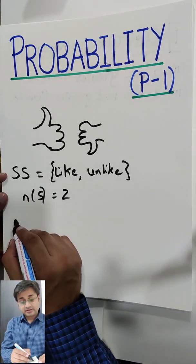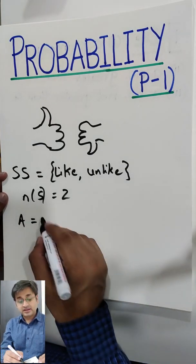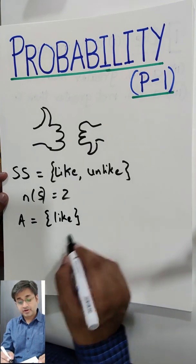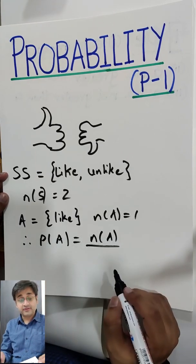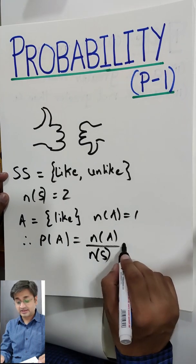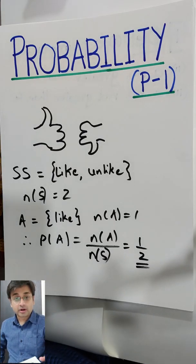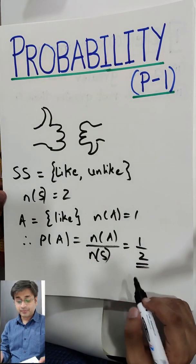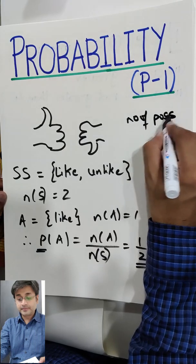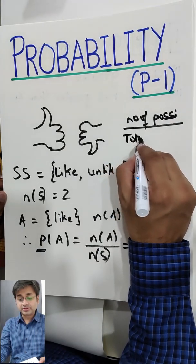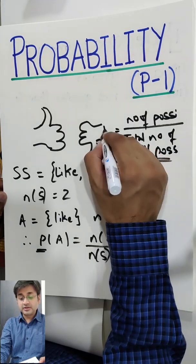And let's say if you've liked it, what is the event or what are the chances that you will like it? So we call it as event A. Number of A becomes 1. Therefore, probability of A is number of A upon number of sample S. So, 1 by 2. There are half chances that you might like it and half chances that you will not like it. That's what probability is — basically, probability equals number of possibilities upon total number of all possibilities.